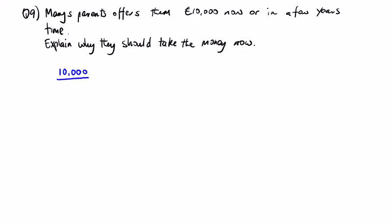If we have an interest rate of 1% and we divide £10,000 by 1.01, we're going to get an answer of £9,900.99.